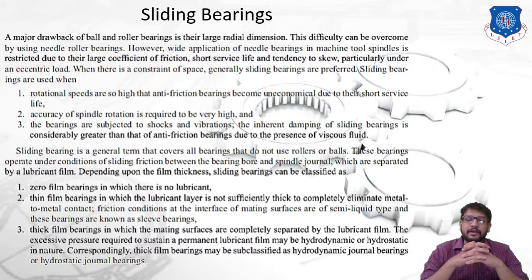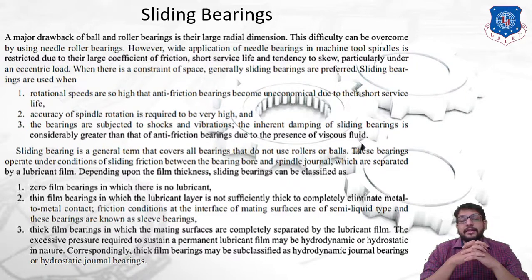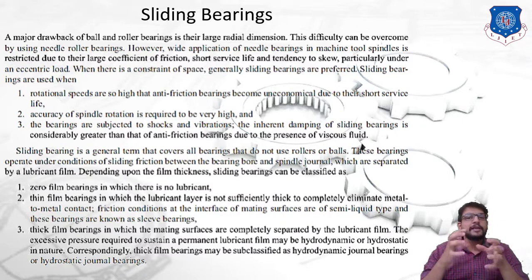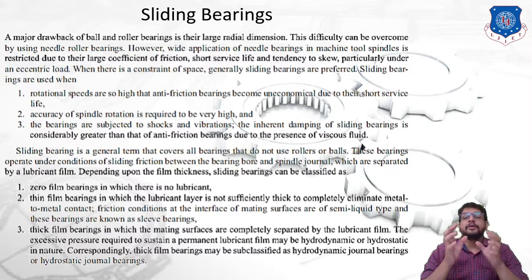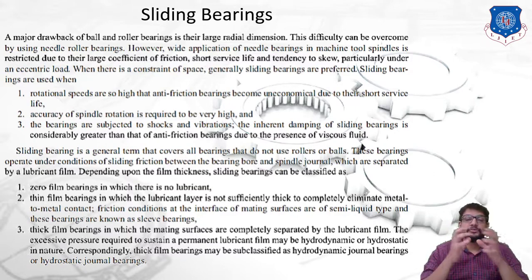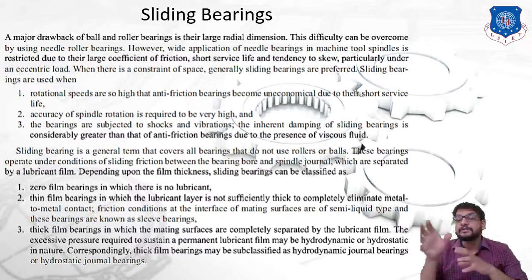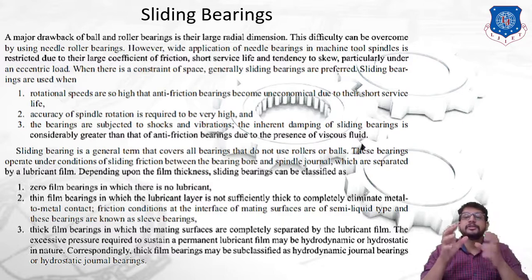We are going to see the design of slim bearings in detail. The third type is thick film bearings, in which the mating surfaces are completely separated by the lubricant film. Excessive pressure is required to sustain a permanent lubricant film, which may be hydrodynamic or hydrostatic in nature. Correspondingly, a thick film bearing may be sub-classified as a hydrodynamic journal bearing or a hydrostatic journal bearing.